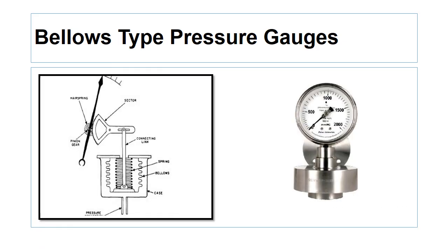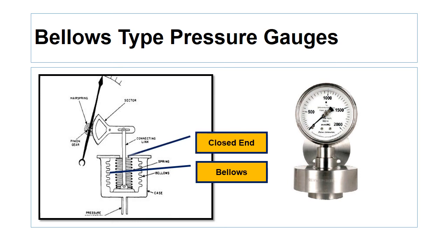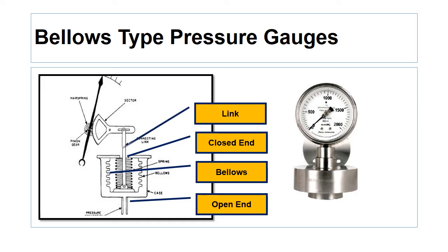Bellows are thin-walled metallic cylinders with deep convolutions. One end of the bellows is closed and the other end remains open. The closed end can move up freely, while the open end is fixed and open to apply pressure. When pressure is applied to the open end, the bellows are compressed, the closed end moves upward, and the link rod between the closed end and the transmission mechanism goes up and rotates the pointer.